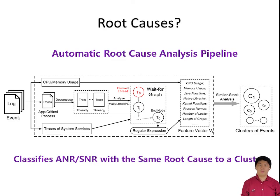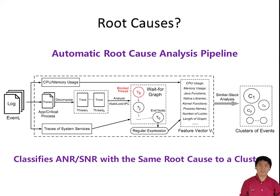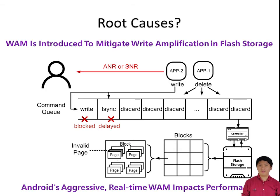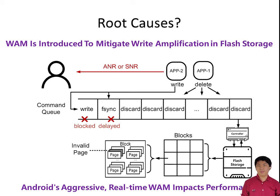This understanding drives us further to ask what are the root causes of ANR and SNR, which is critical to uncovering optimization opportunities. We build an automatic analysis pipeline based on wait-for-graph and similar stack analysis to assist pinpointing root causes in our large-scale dataset. As a result, we locate four major root causes and surprisingly find that the largest root cause — which we call pathological write amplification mitigation in Android — can in fact be fundamentally eliminated. This mechanism in Android is originally designed to mitigate a specific problem in flash storage called write amplification. However, its special synchronization characteristics lead to performance impacts on systems and apps.